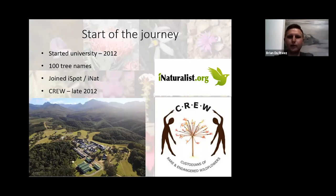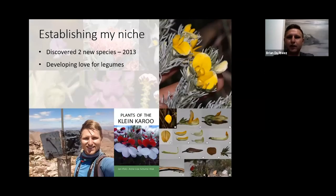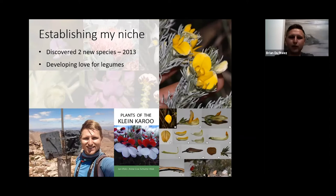Now we are heading into the Klein Karoo. I discovered my first two new species back in 2013 — both of them Aspalathus from the Swartberg Mountains. This immediately sparked my interest in legumes, as I thought it was so easy to discover new species. Needless to say, I did not know what was lying ahead for me.